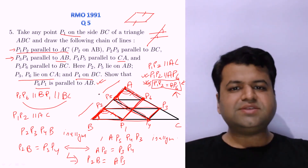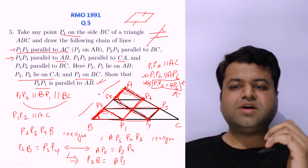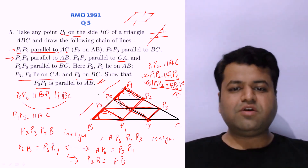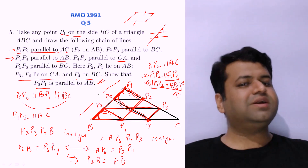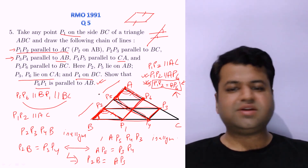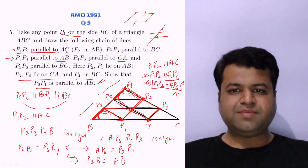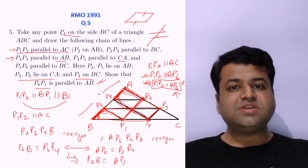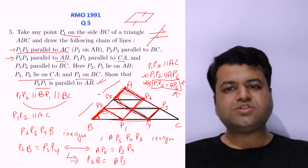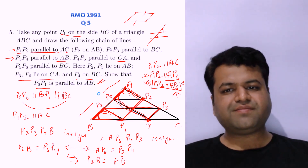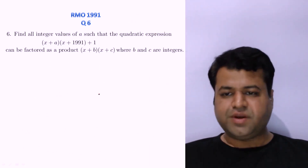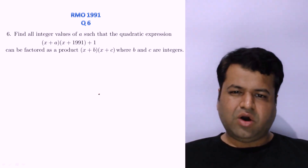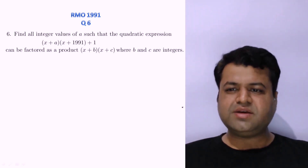So this question was pretty easy. All we needed was a simple property of parallelogram and a little property of similar triangles as well as congruent triangles. Now let's move to question 6 of RMO 1991. This question is of number system, or you can say it is from quadratics.